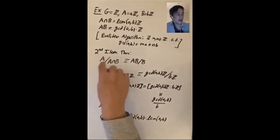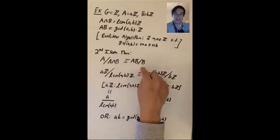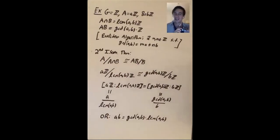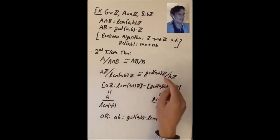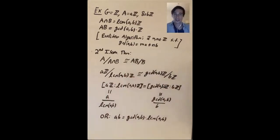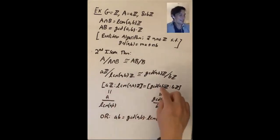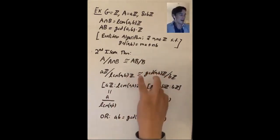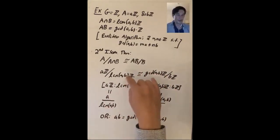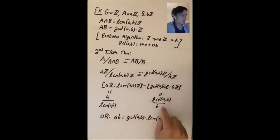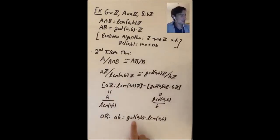The second isomorphism theorem says A mod (A∩B) is isomorphic to AB mod B. Here that gives aZ mod lcm(a,b)Z is isomorphic to gcd(a,b)Z mod bZ. Equating the orders: the index of lcm(a,b)Z in aZ is a/lcm(a,b), and the index of bZ in gcd(a,b)Z is gcd(a,b)/b. Since these groups are isomorphic, a/lcm(a,b) = gcd(a,b)/b, which gives a·b = gcd(a,b)·lcm(a,b).